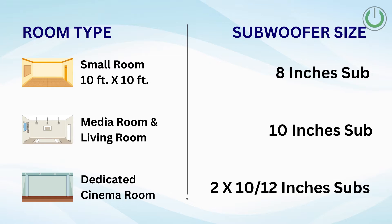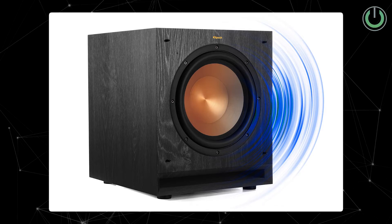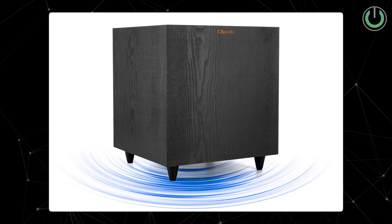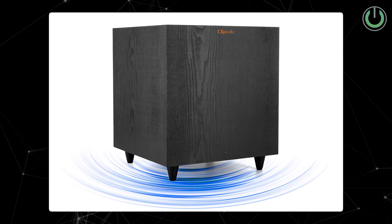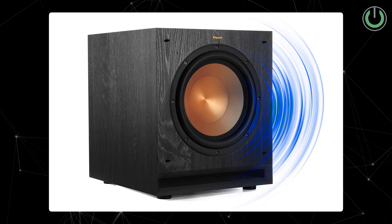Another element while selecting the cone is to understand which direction the cone is facing. There is a front-firing subwoofer and a down-firing subwoofer. Front-firing subwoofers hit you directly in your chest and are most preferable for home cinema purposes. Down-firing is also not bad if you really want the floor to rattle.